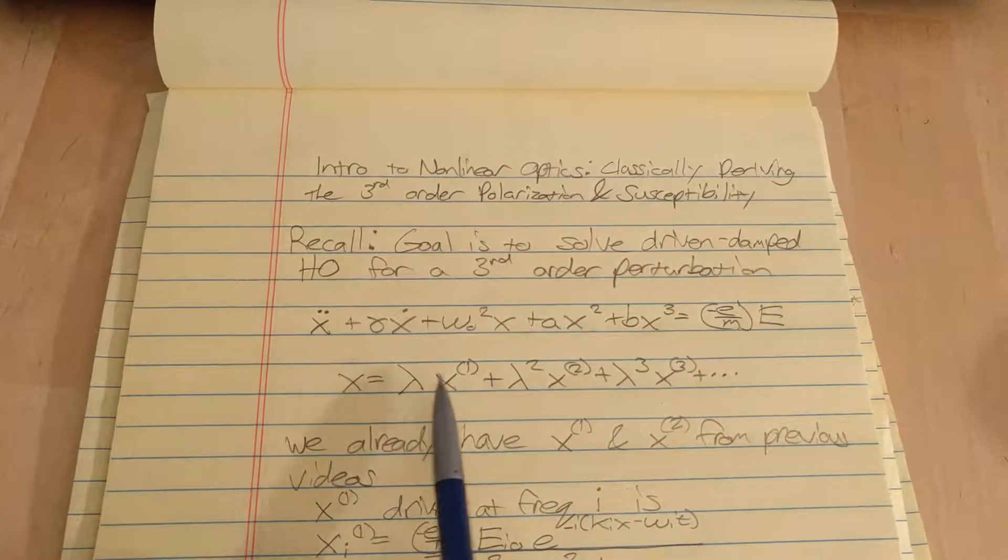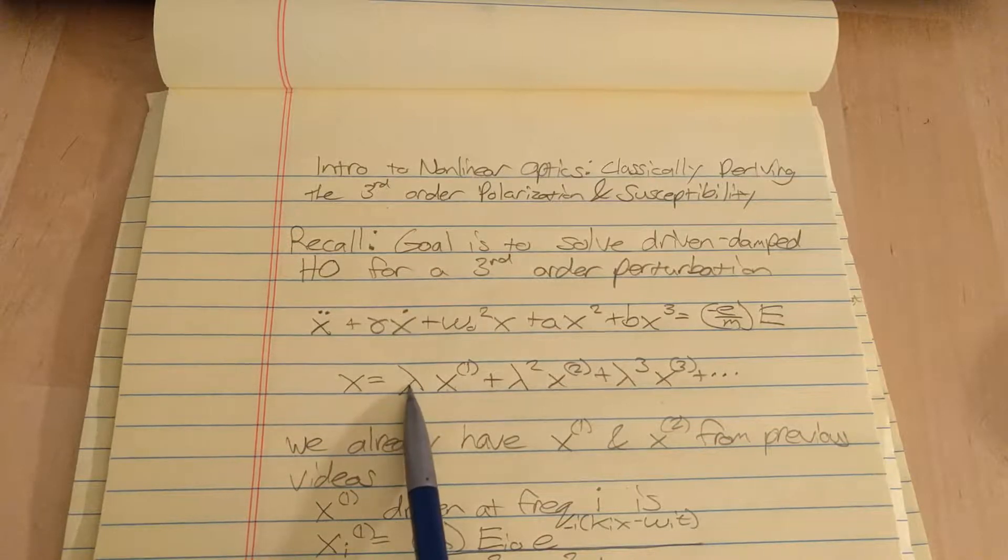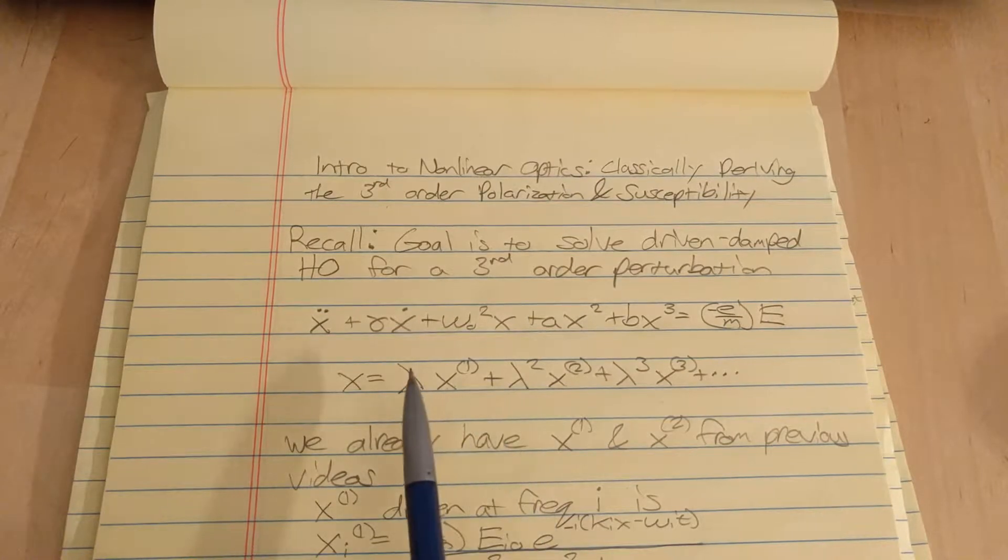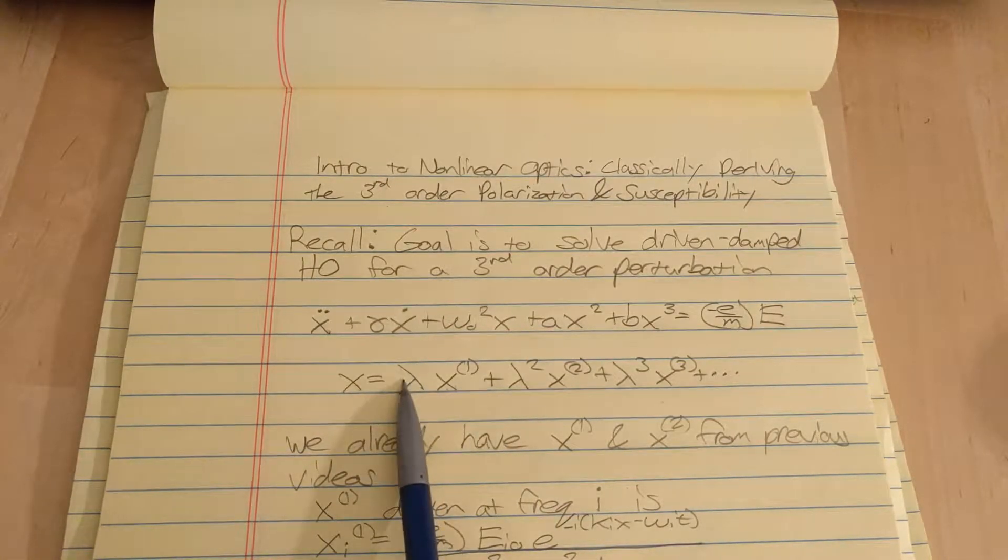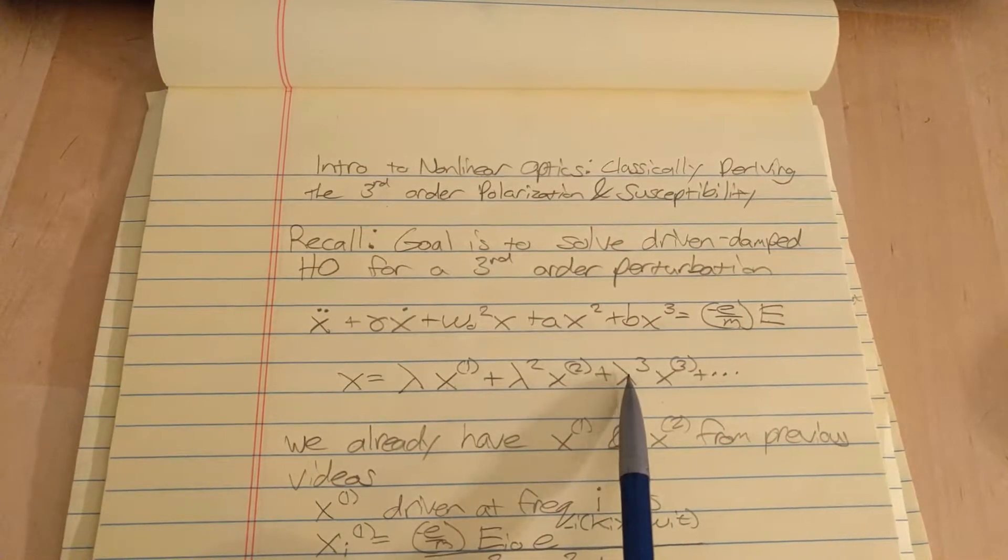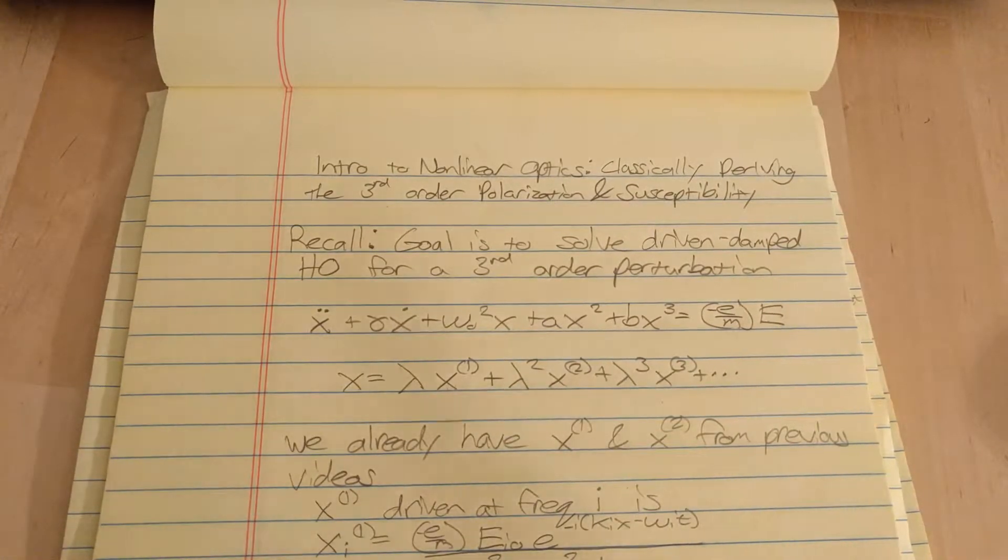And in the other two videos we took all the terms with just lambda in them and plugged them into this equation, and that's how we got the first-order polarization and susceptibility. Similarly for lambda squared, and now we're going to take all the terms with lambda cubed in them.